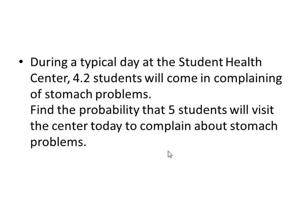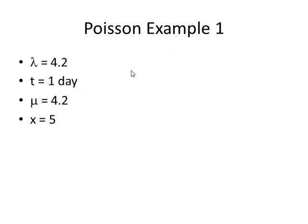During a typical day at the Student Health Center, 4.2 students will come in complaining of stomach problems. Find the probability that 5 students will visit the center today to complain about stomach problems. Now we know it's not binomial because it's not 5 out of a given number of students. Also, we have no way of knowing what the probability is that any one student comes in for help. The way we know it's Poisson is we're given a typical number of students that will come in, 4.2 students per day. So lambda is 4.2, and because the problem only involves one day, t will be 1.